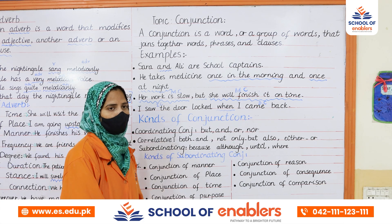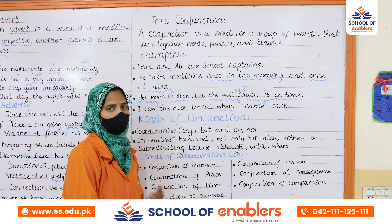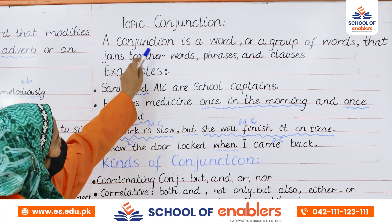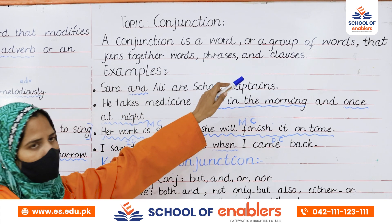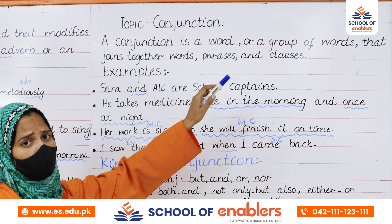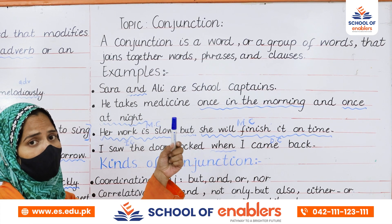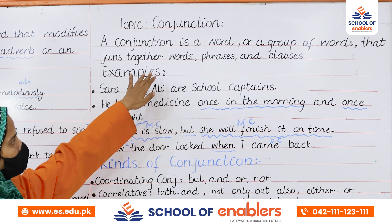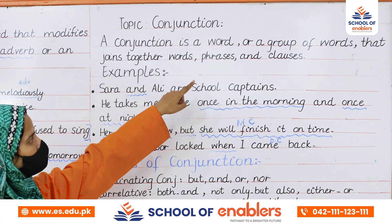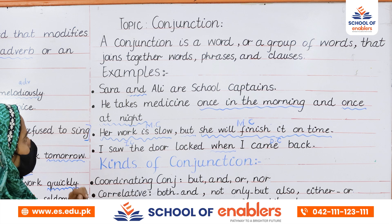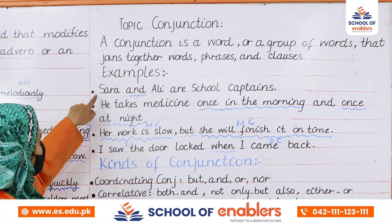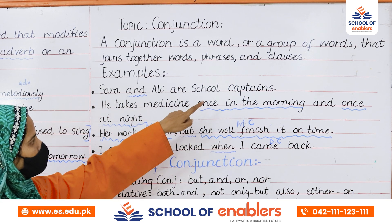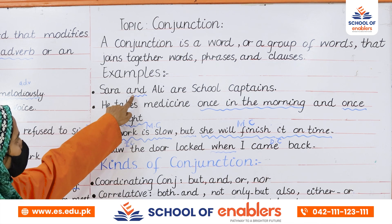So we will explore it further now. A conjunction is a word or a group of words — it's not only one word, it might be a group of words — that are used to connect words, phrases, and clauses. Let's see the examples.